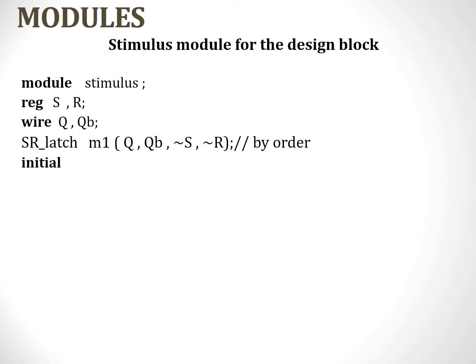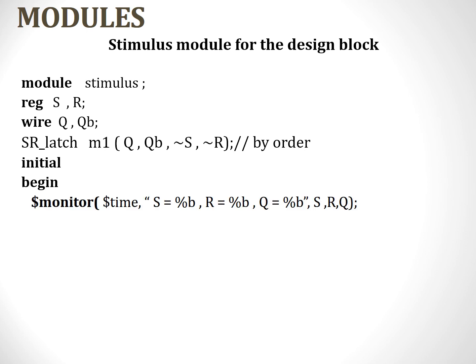Once instantiation is done, it is time to apply the inputs. We use the keyword initial followed by begin, since we have multiple statements. We have a system task dollar-monitor, which monitors the signals mentioned in the list and displays their values whenever they are modified. We are monitoring S, R, and Q signals in the SR latch. Dollar-time displays the timing instant at which changes occur to the signal.